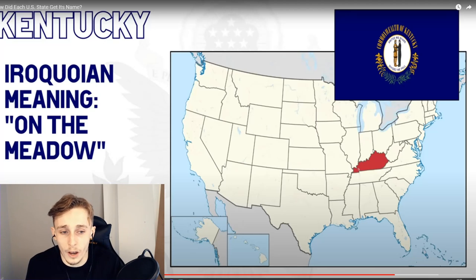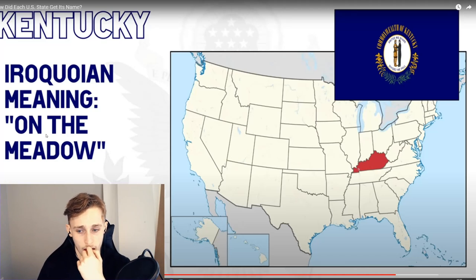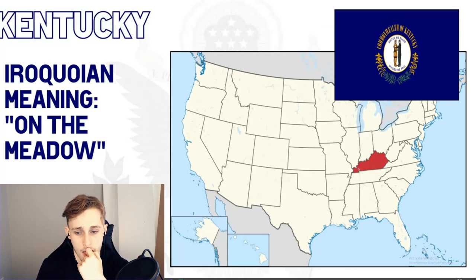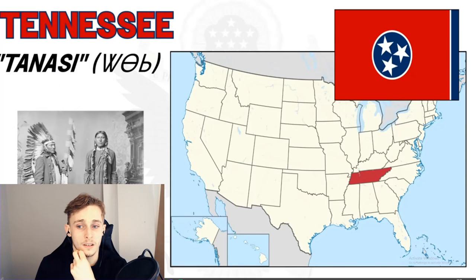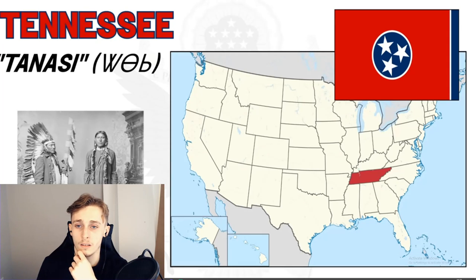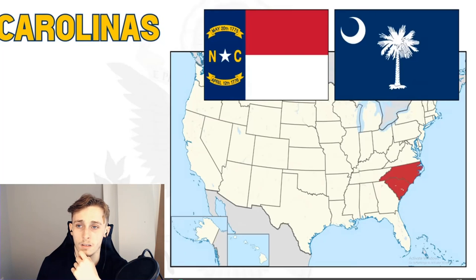Others have suggested the term 'kenta-aki' which could have come from an Algonquin language. Tennessee's name comes from the local Cherokee, who had a village called 'Tanasi' located on a river of the same name. The meaning of this name is unknown, although some accounts suggest it meant something like 'meeting place.'